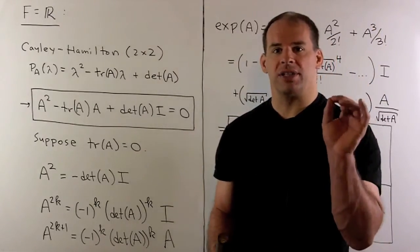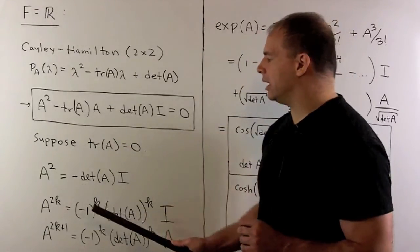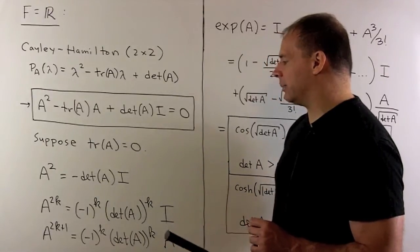Now if I let the trace of A be equal to zero, then this equation reduces to A squared equals minus determinant of A times the identity matrix.